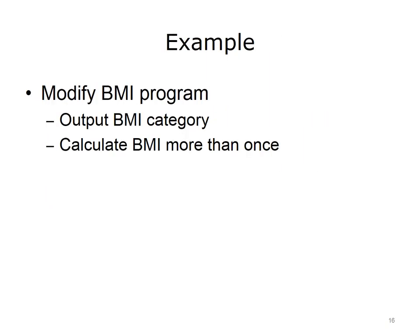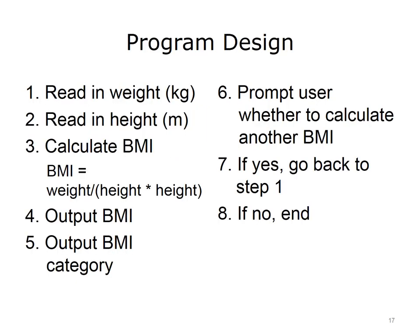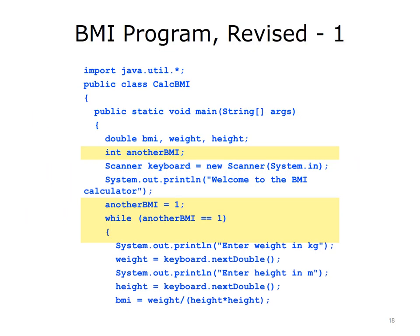This program will modify the BMI calculator program by adding the IF statement for outputting the BMI category, and allowing the program to calculate more than one BMI value. The program will still read in the weight and height from the user, calculate the BMI and output it, determine the category for the BMI and output it, and then ask the user if they want to calculate another BMI. If they do, it will go back to the beginning and repeat; if not, the program will end. The entire program is shown on three slides, with added code highlighted. The yellow highlights show the changes needed to implement the loop.